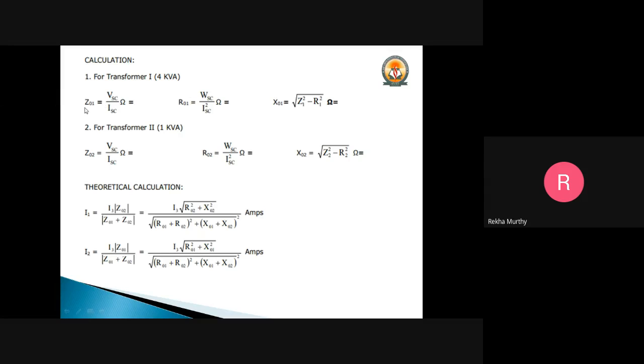The further calculation, when we are going to find out the equivalent resistance and equivalent circuit, these are the parameters which you have to take out. For transformer 1 with 4 kVA if you consider, Z01 is equal to VSC by ISC, and R01 will be WSC by ISC square, and X01 will be equal to square root of Z square minus R1 square.